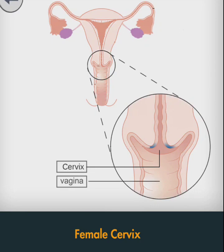The opening in the ectocervix, the external OS, marks the transition from the ectocervix to the endocervical canal. The endocervical canal, or endocervix, is the more proximal and inner part of the cervix. It is lined by a mucus-secreting simple columnar epithelium. The endocervical canal and the uterine cavity meet at a narrowing called the internal OS.